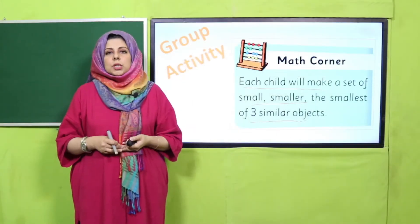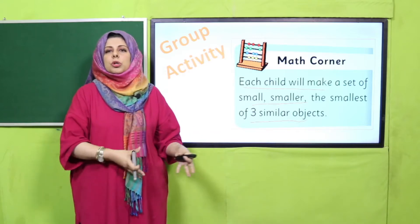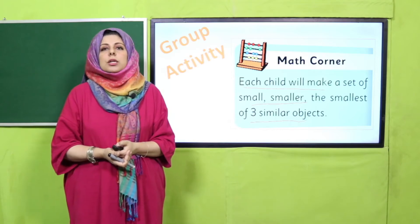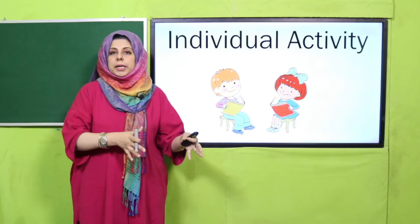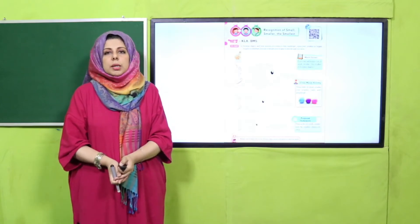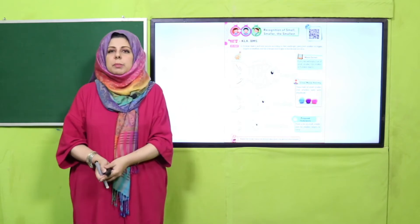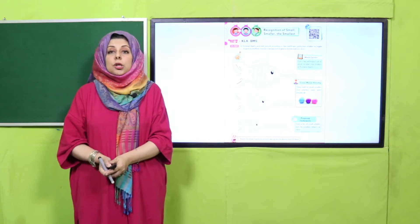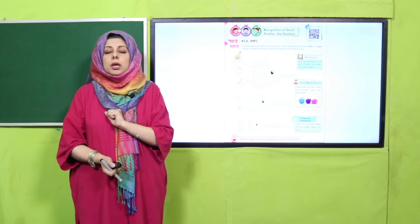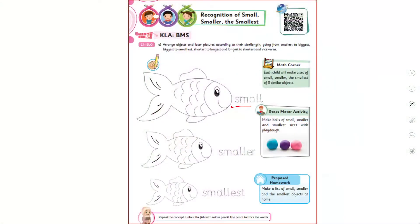Math corner activity group mein karne se ab teachers aapko bhi idea ho gaya hoga ke bacchon ko small, smaller or smallest objects ki recognition honi shuru ho chuki hai. To aage barhate hain aur bacchon ko ab settle karte hain apne table ke upar apni book ke saath. Thoda sa task — bacchon, aaj aapka jo page number hai, us ke upar kya bana hua hai — kya bata sakte ho? Haan ji, in ke upar teen fish bani hui hain aur teenon fish ka size different hai. So we have small, smaller and the smallest fish.